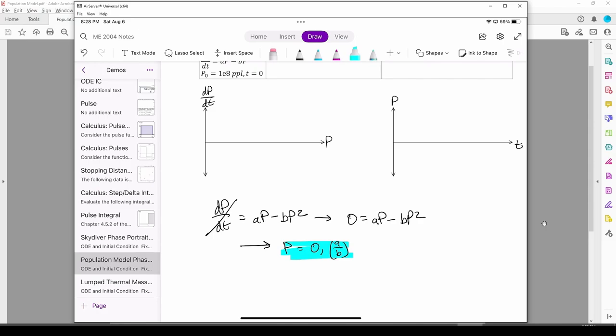When we set dp/dt to 0, we get two fixed points, 0 and a/b.